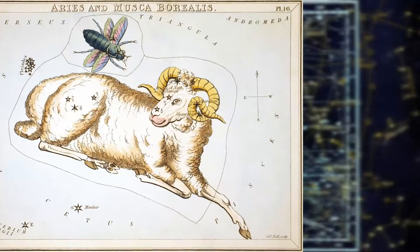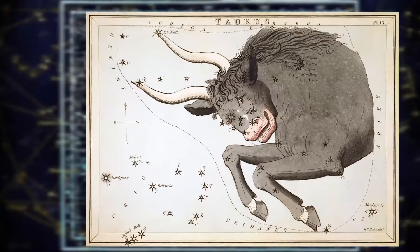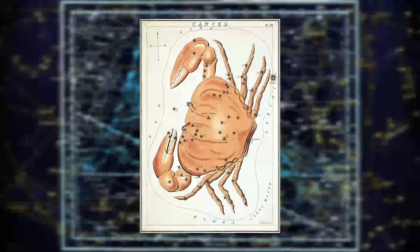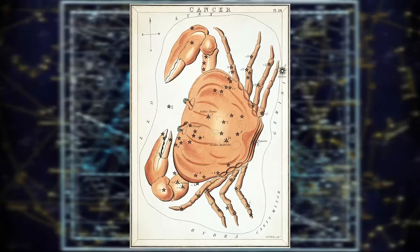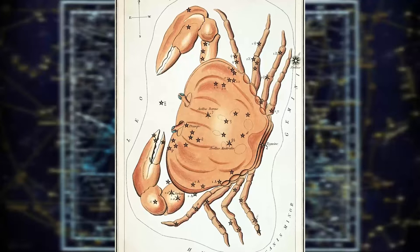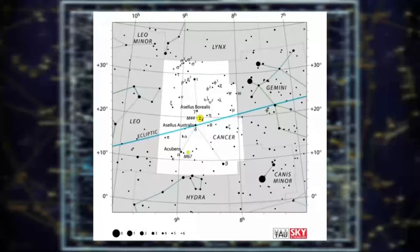Constellations in the far southern sky were added from the 15th century until the 18th century, when European explorers began travelling to the southern hemisphere. In 1922, the International Astronomical Union formally accepted the modern list of 88 constellations, and in 1928 adopted official constellation boundaries that together cover the entire celestial sphere. Any given point in a celestial coordinate system lies in one of the modern constellations.